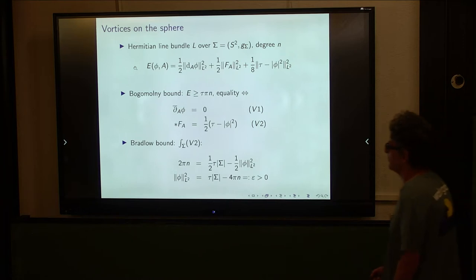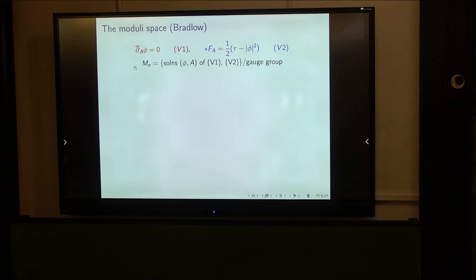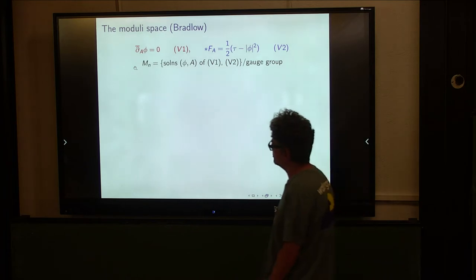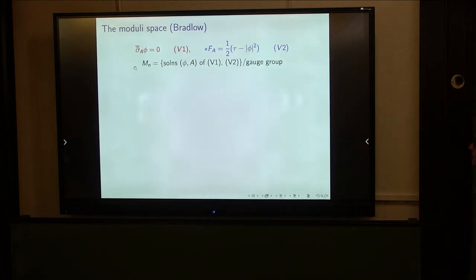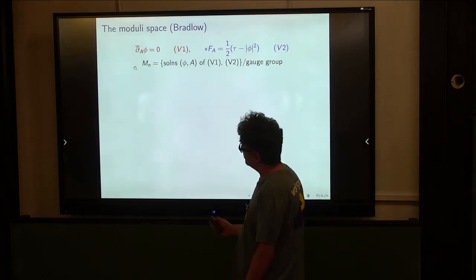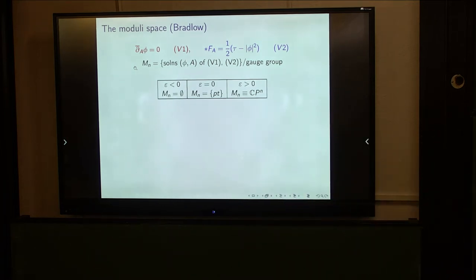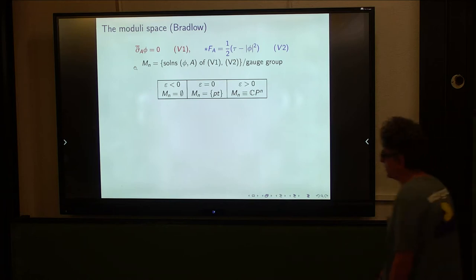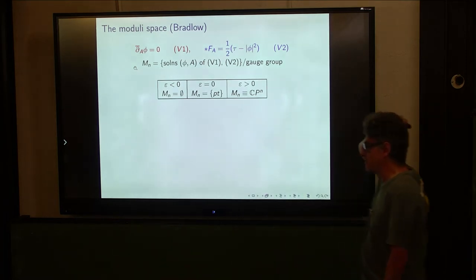This is the system I'm interested in — very old, very well studied, very easy to understand. We're interested in the moduli space of solutions, the vortex moduli space M_N: the space of solutions of that pair of equations modulo the action of the gauge group. The structure of that moduli space depends crucially on the value of the parameter epsilon. If epsilon is negative, there can be no solutions, so the moduli space is empty.